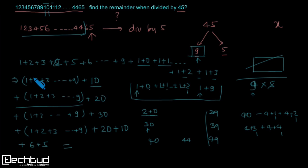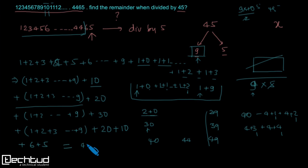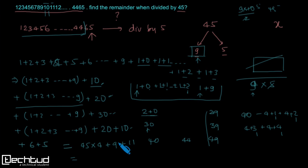Now let's compute the total sum. The sum 1+2+3+...+9 = 9×10/2 = 45. We have four such units, giving 45×4 = 180. The tens contributions are 10 + 20 + 30 + 20 = 80... let's recount: 10+20+30 = 60, plus the 40–44 group gives 20, so 80 total, plus 6+5 = 11. So the total sum of digits is 180 + 90 + 11 = 281.